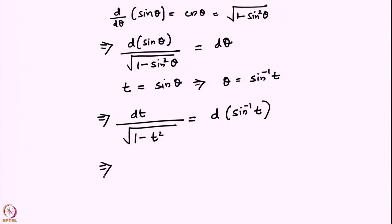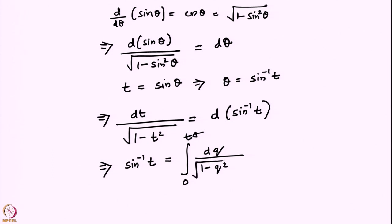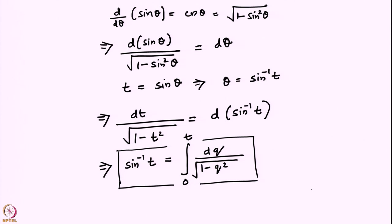Integrating both sides, if I write the left-hand side on the right and vice versa, I get sin⁻¹ t equals the integral from 0 to t. Using a dummy variable q for integration — replacing all the t's by q and putting the upper limit as t — that gives me a function of t. So we know that the integral from 0 to t of dq/√(1 − q²) equals sin⁻¹ t.